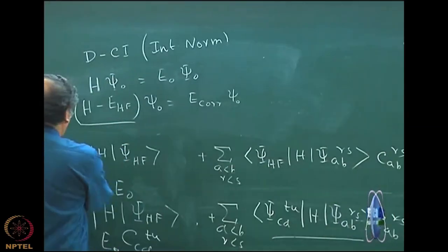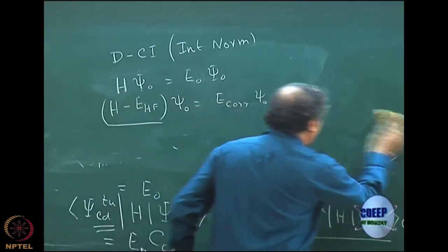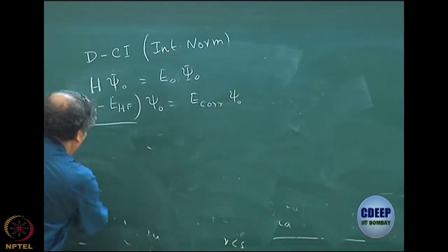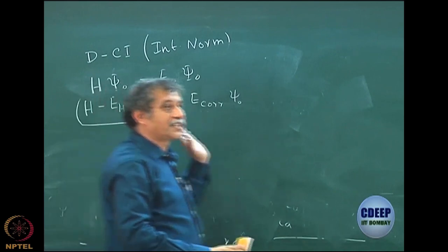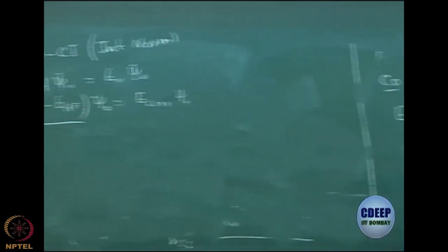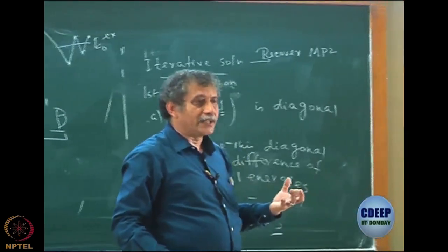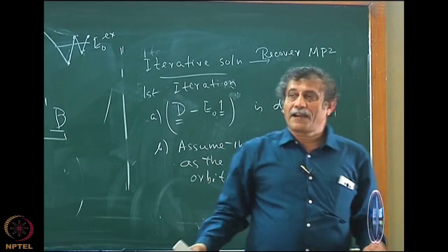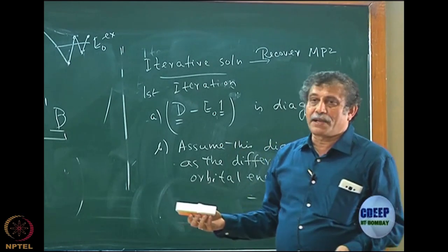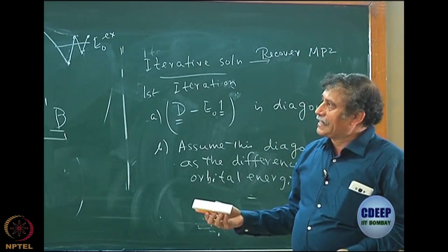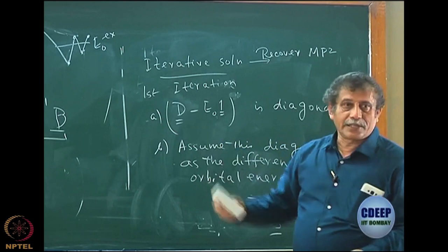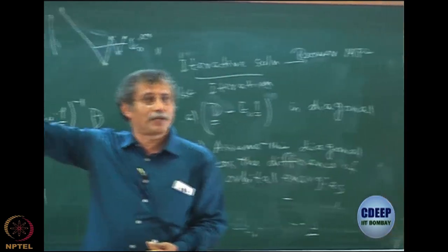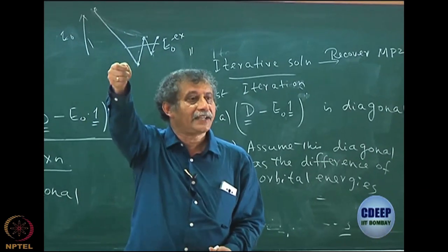This operator is very often used in quantum chemistry simply because its eigenvalue is directly the correlation energy. If I take the Hamiltonian, its eigenvalue is not the correlation energy — it is E0. But if I define a new operator H minus E_Hartree-Fock, then this operator's eigenvalue is E_correlation. The eigenfunction remains the same as the exact eigenfunction of the Hamiltonian, because I am simply subtracting a number.